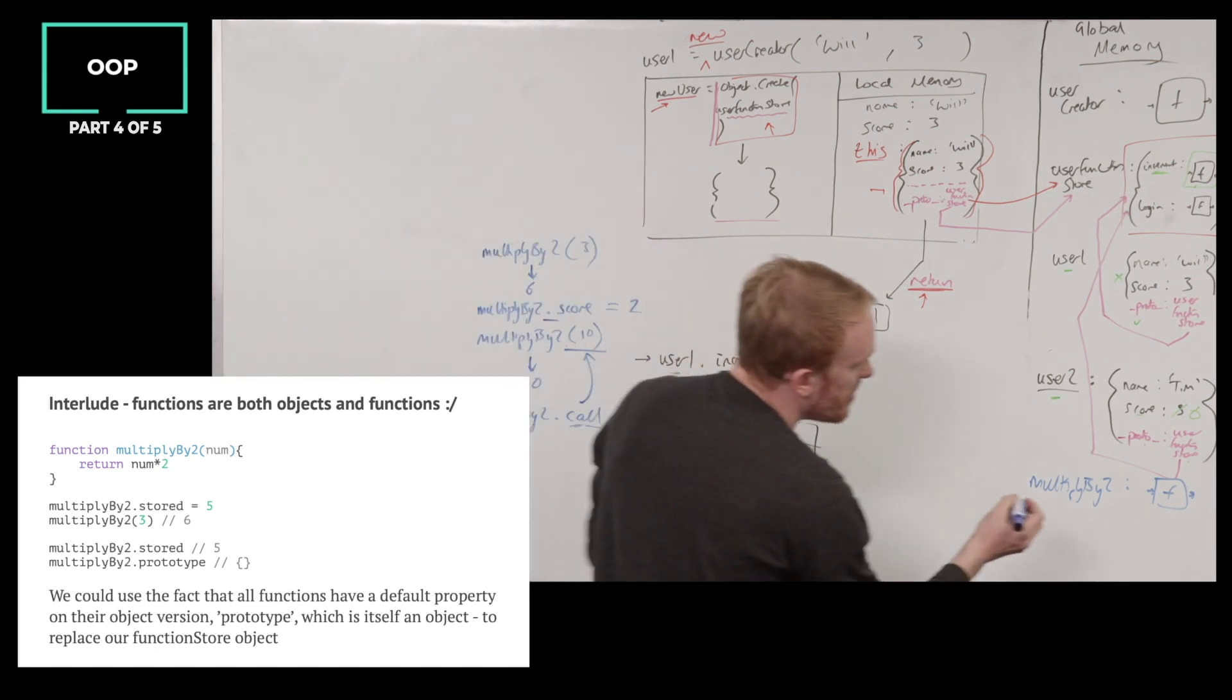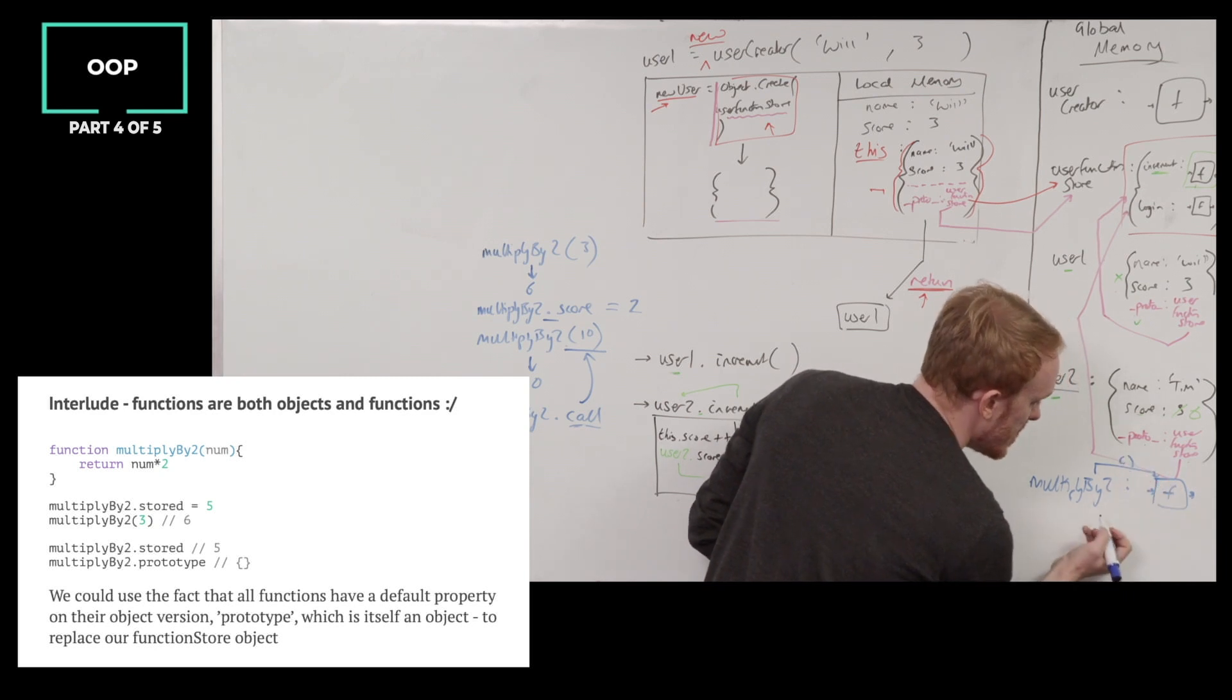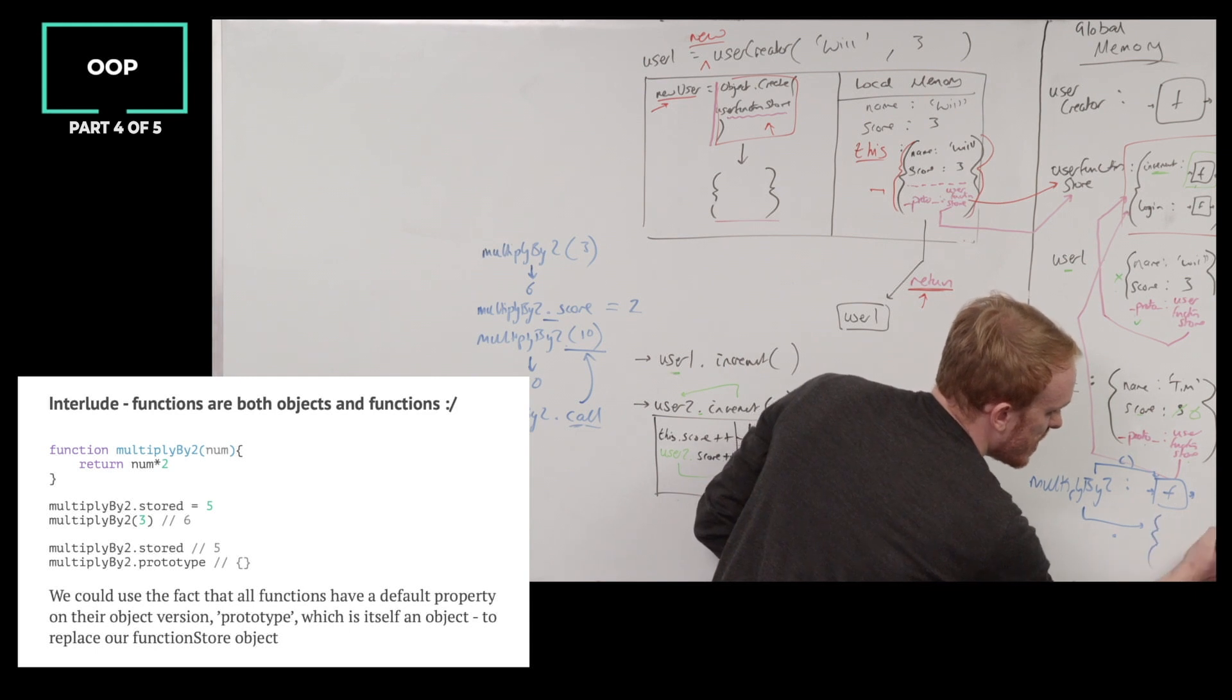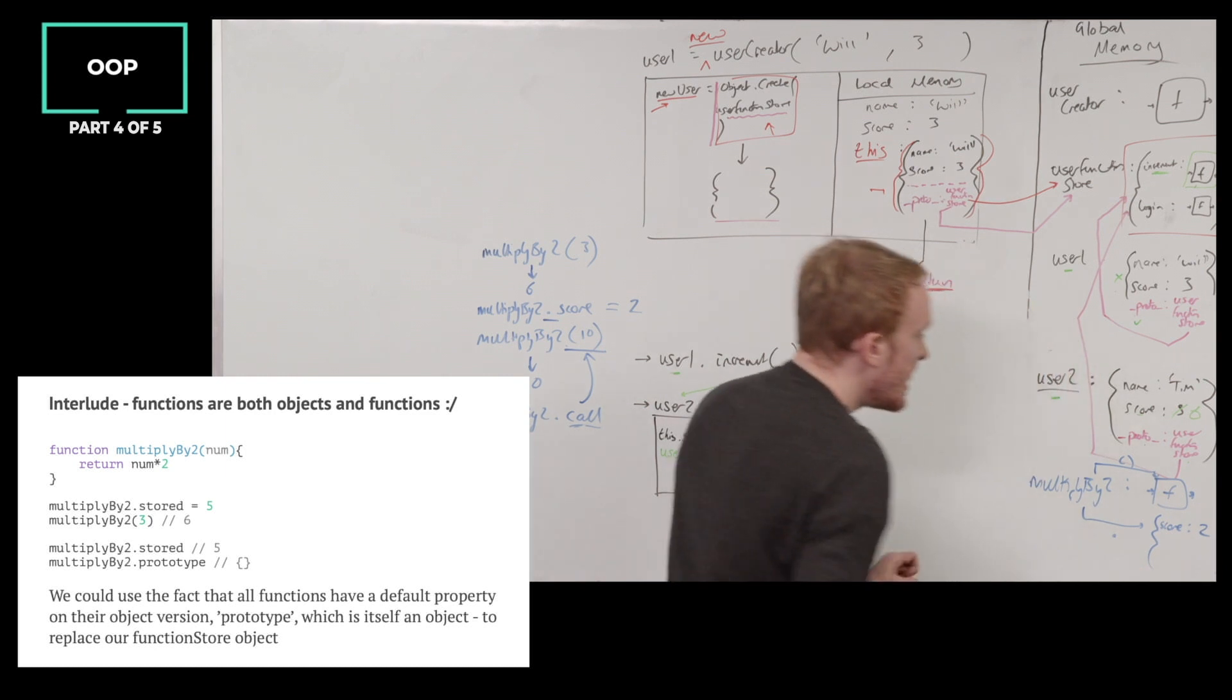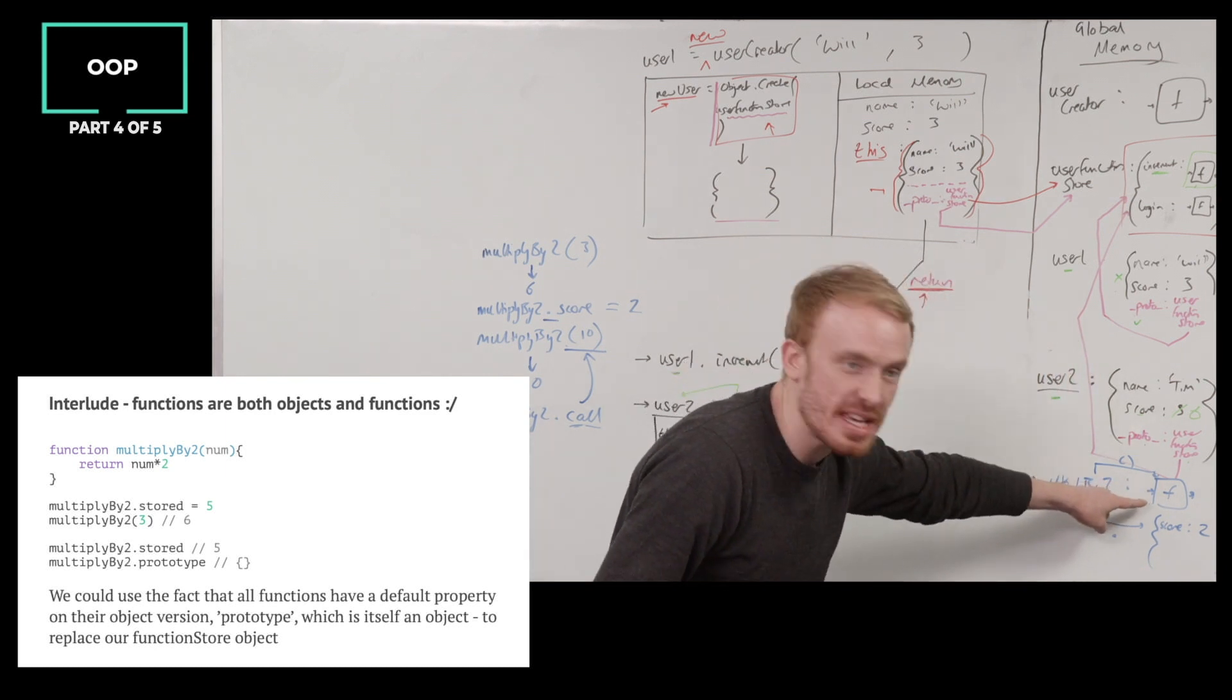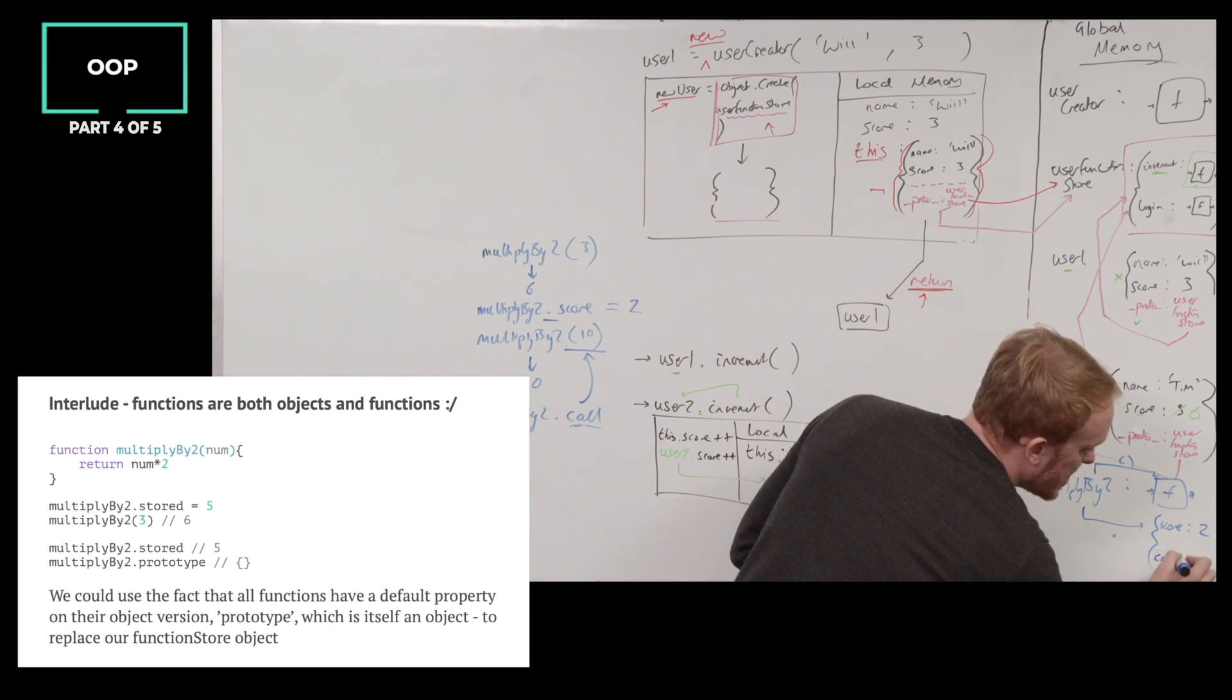I don't know if I always love that. What I prefer to think of is, multiply by 2 has a function version, and it has an object version, and we can add properties to its object version, score is 2, and that does not prevent it also having its function version, but you could think of the function version as being like a secret call property that's going to run the functionality.